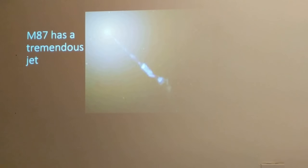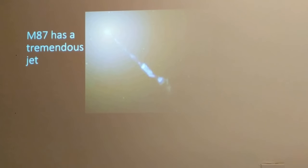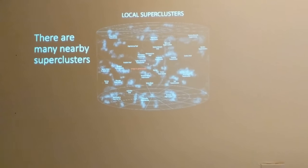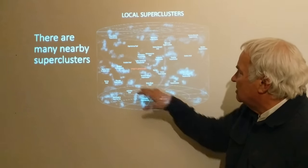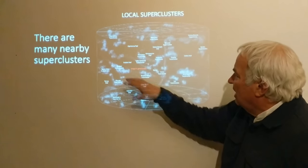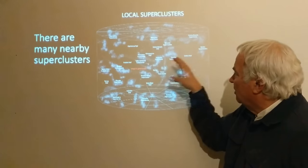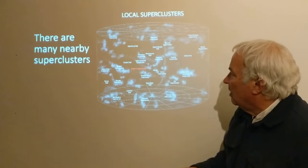At the heart of the Virgo supercluster is the galaxy M87, which has probably swallowed dozens of Milky Way-sized galaxies over its history. It has a tremendous jet coming from a supermassive black hole, visible here. The surrounding points of light are stars and globular clusters — M87 has many hundreds, even thousands, of globular clusters. There are many nearby superclusters as well, and though details are hard to see, the universe is quite structured: galaxies form clusters, and clusters form clusters, and so on.